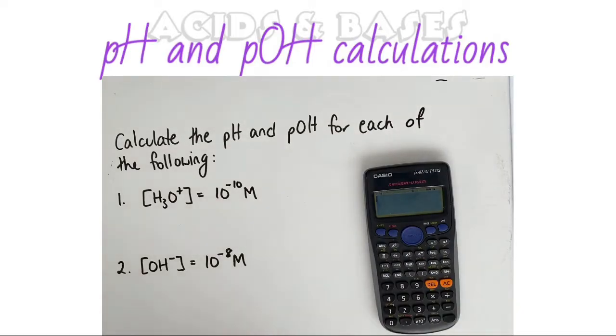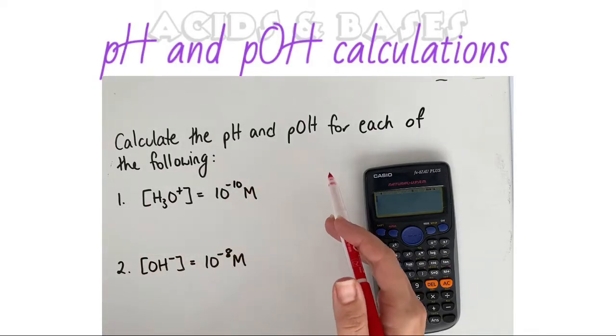Calculate the pH and the pOH for each of the following. In our first example, we're given the H plus ions and we're asked to find the pH and the pOH.